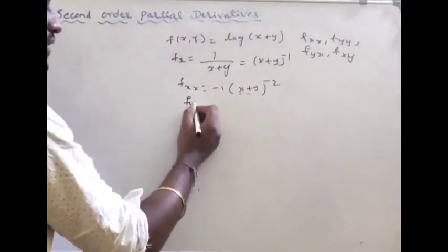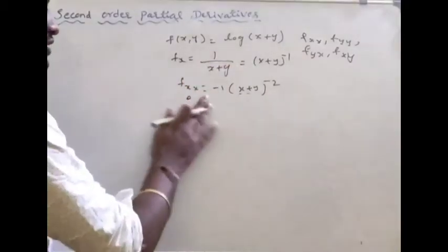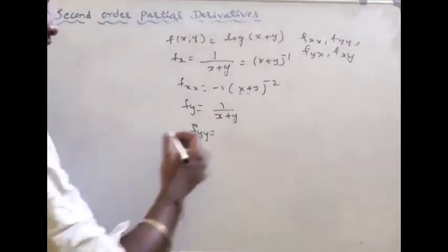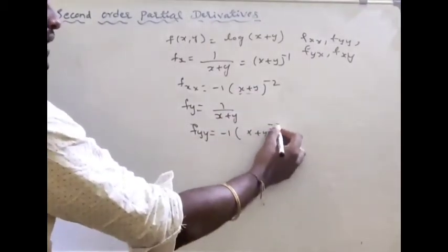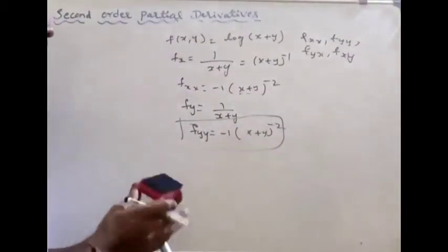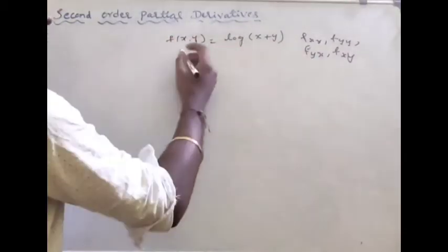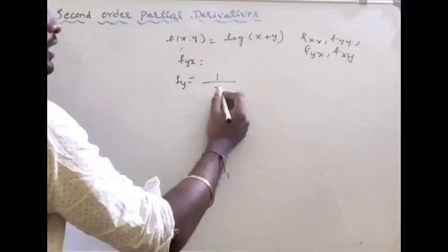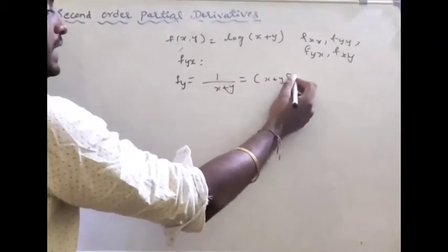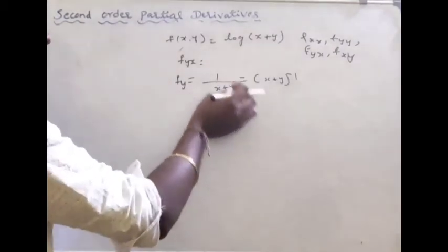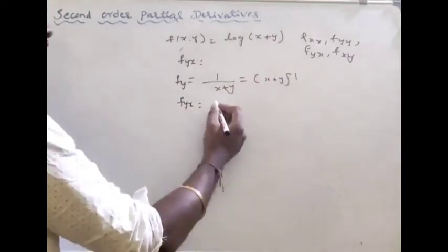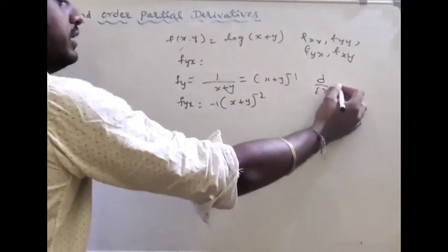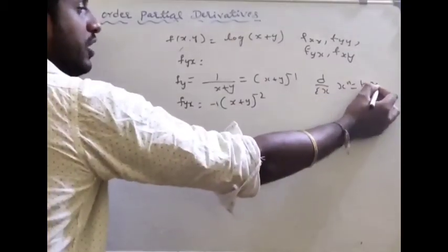For fyy: partial derivative with respect to y of 1 over (x + y) gives minus (x + y) to the power minus 2. Using the formula for d/dx of x^n equals n times x^(n-1), we get fyy equals minus 1 over (x + y) squared. For fyx: first with respect to y gives 1 over (x + y), then differentiate with respect to x gives minus (x + y) to the power minus 2, so fyx equals minus 1 over (x + y) squared.